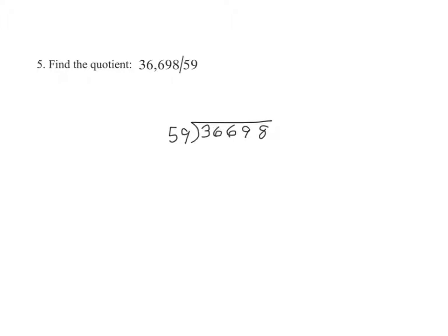And we begin by asking ourselves, how many times does 59 go into 366 at most? And the answer is 6, since 6 times 59 gives us 354.